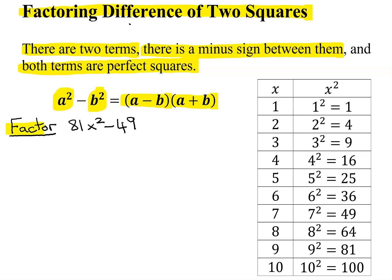So let's take a look at this example where we're asked to factor 81x squared minus 49. When we first look at this problem, the thing you notice to start with is there are two terms. So is this the difference of two squares?